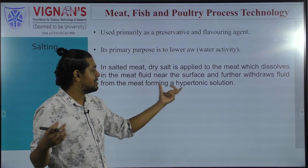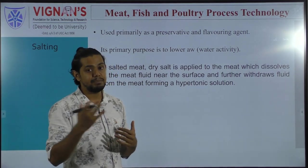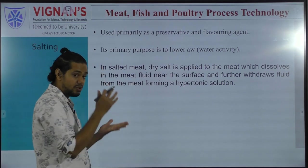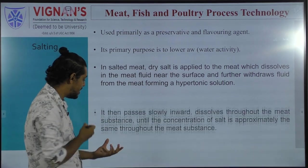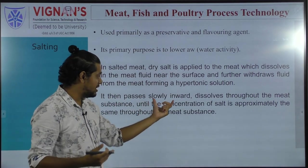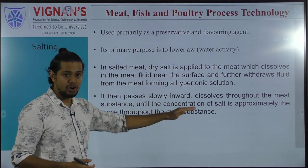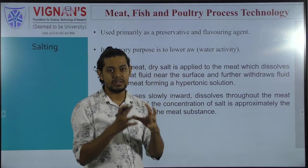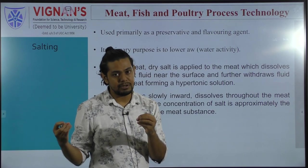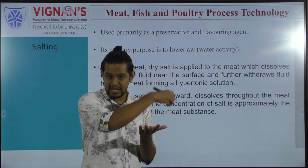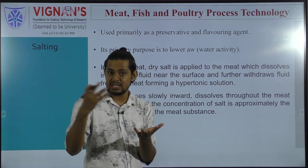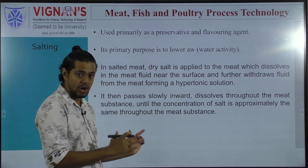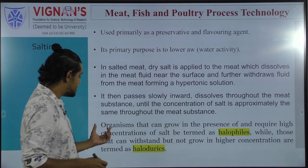After extracting moisture from the surface of the meat, the salt migrates inside and dissolves all available moisture present inside the carcass or meat product. This is one of the important advantages of using salt as a major preservative. Organisms that can grow in the presence of higher salt content are regarded as halophiles — a distinct category of microorganism which can resist and multiply at higher salt concentrations.